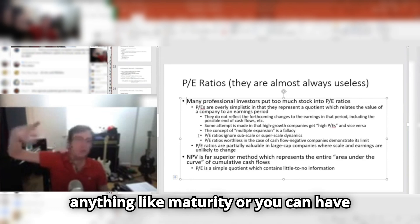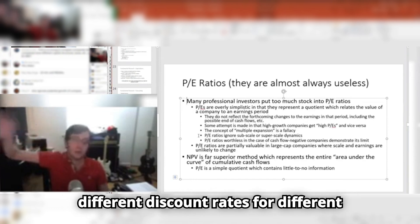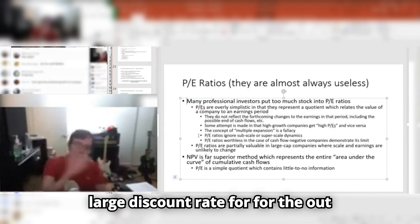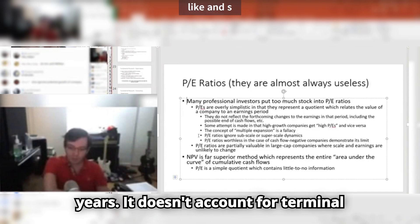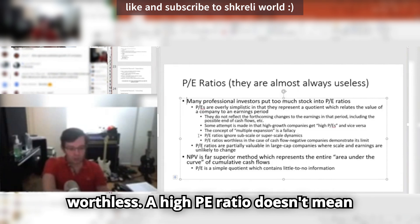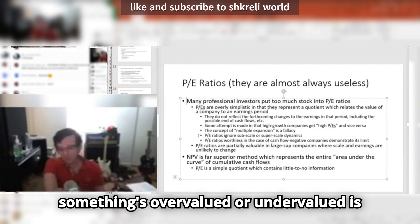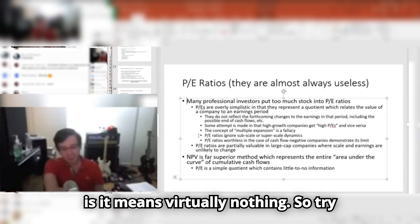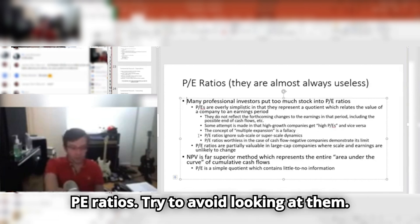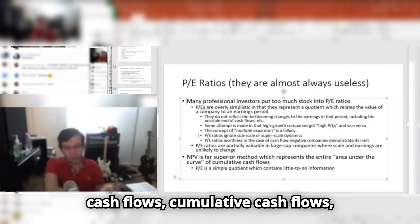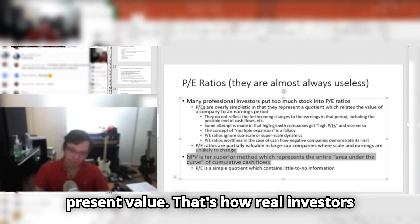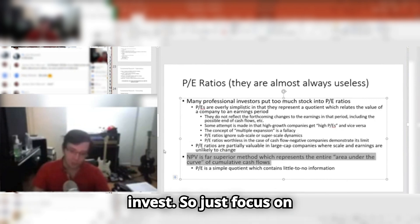But the P/E doesn't encompass anything like maturity, or you can have different discount rates for different periods of investment — a small discount rate for the next few years, a large discount rate for the out years. It doesn't account for terminal growth. It doesn't account for any of those things. So P/E ratio is basically worthless. A high P/E ratio doesn't mean something's overvalued or undervalued — it means virtually nothing. Try to avoid anyone that talks about P/E ratios. Just think about area under the curve cash flows, cumulative cash flows, integral of cash flows. That's a net present value. That's how real investors invest.